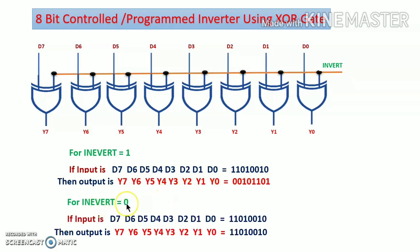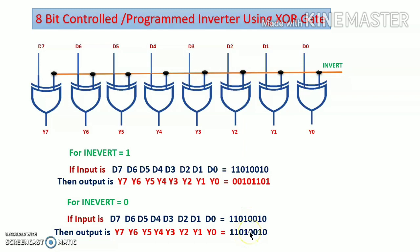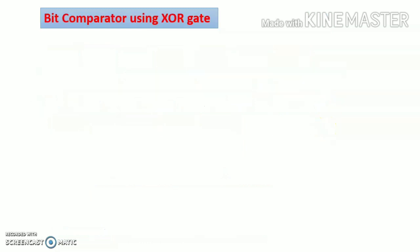In the second case, if invert is 0, the input data passes through unchanged. D7 is 1 and invert is 0 — an odd number of ones at the input — so we get Y7 output 1. Similarly, D0 is 0 and invert is 0, giving us 0 output. In this way we get the same number at the output; it is not complemented. It is called a controlled inverter because using this control input we can complement or uncomplement the input binary number.